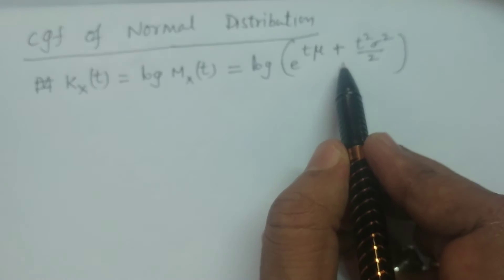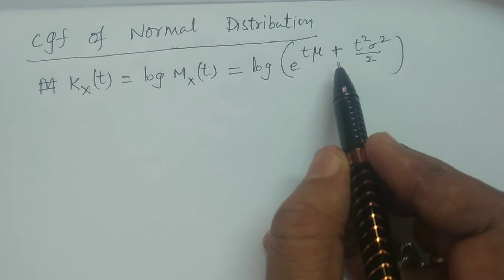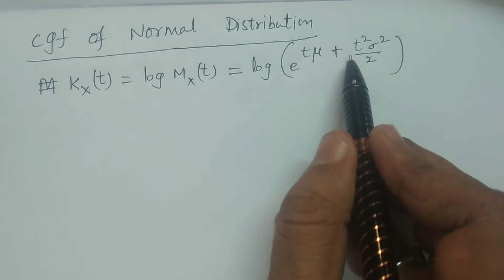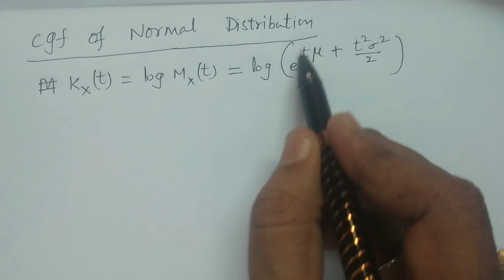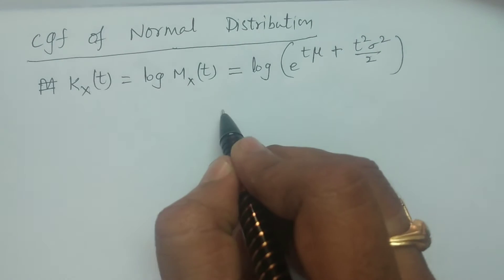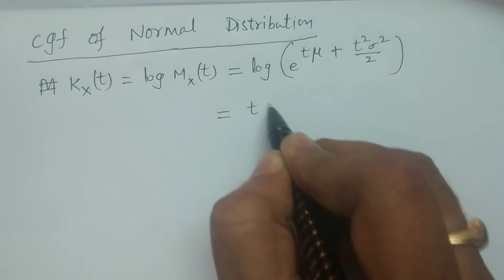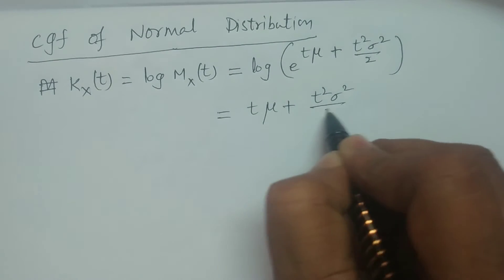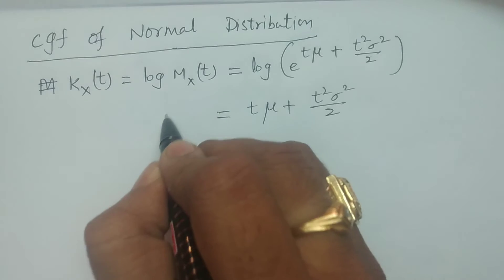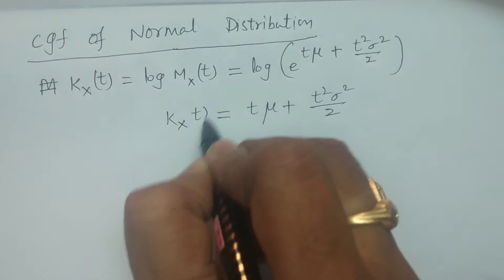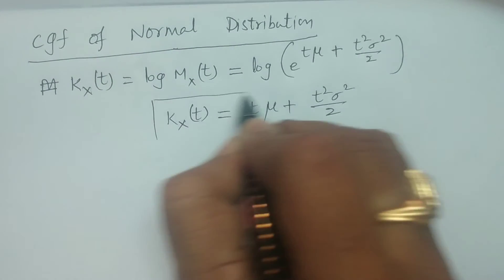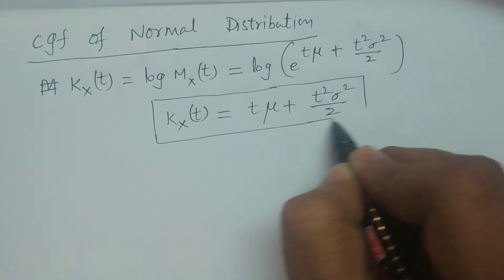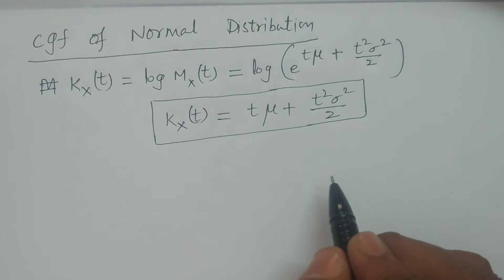Therefore this is the moment generating function of normal distribution. But log of e to the power x is x, that is t·μ plus t²σ²/2. So therefore the cumulant generating function of normal distribution is K(x,t) = t·μ + t²σ²/2.